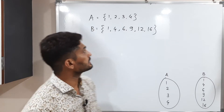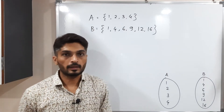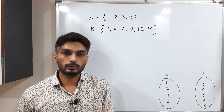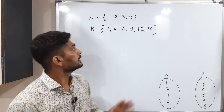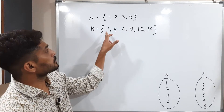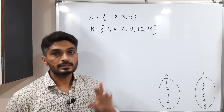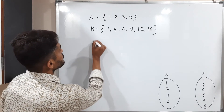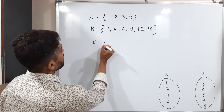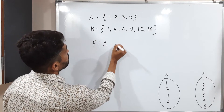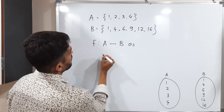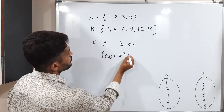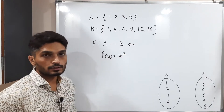I have considered two sets: A having elements {1, 2, 3, 4} and B having six elements {1, 4, 6, 9, 12, 16}. A function f is defined from A to B as f(x) = x².